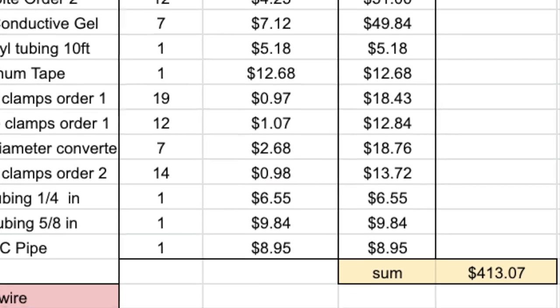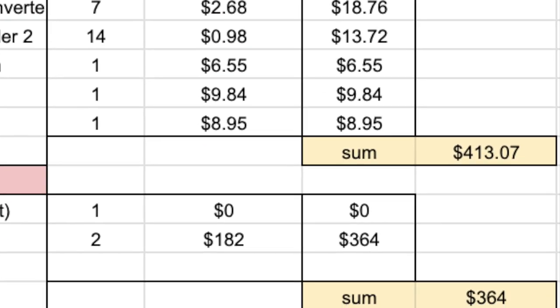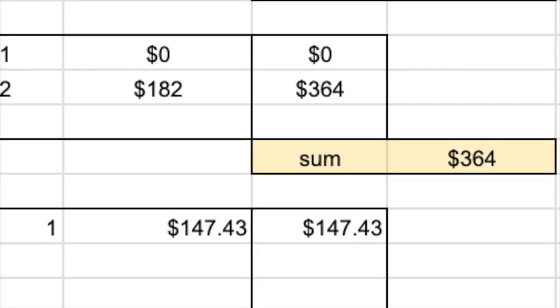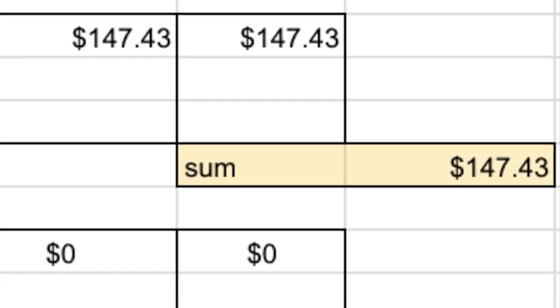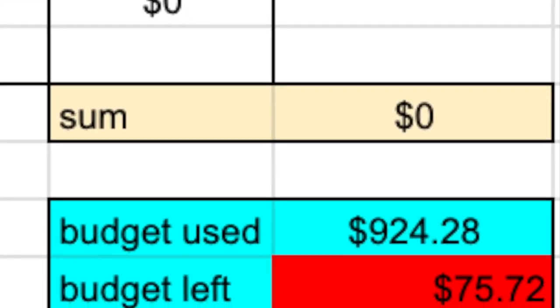The budget for the materials was $1,000 but the team only used $925. The main expense was the magnetic wire that cost more than $300 and the elements for the heat transfer system that cost $415.